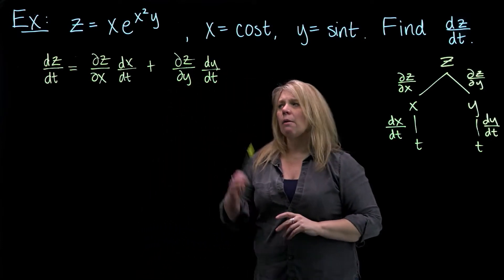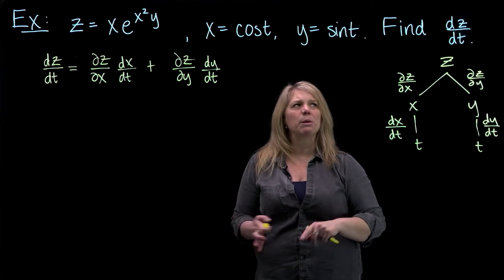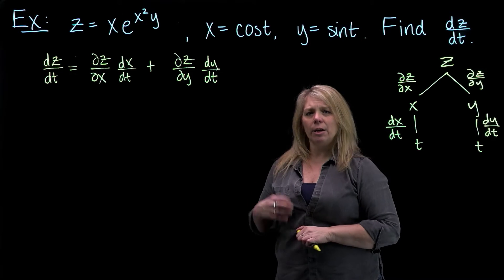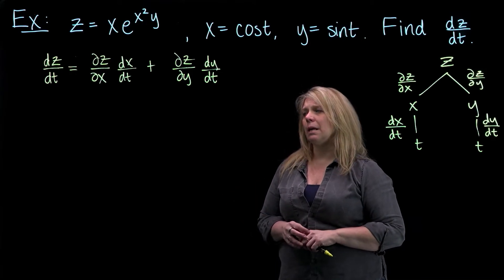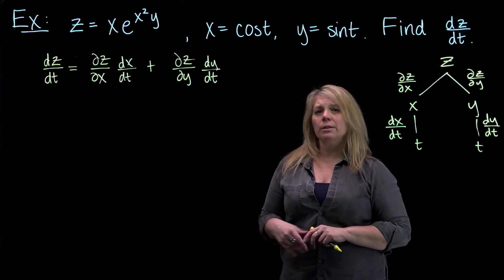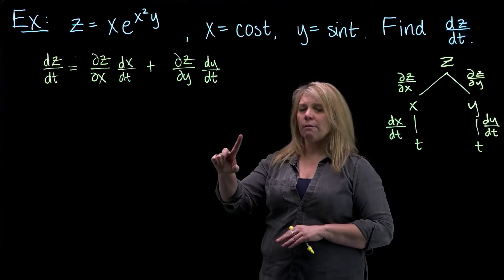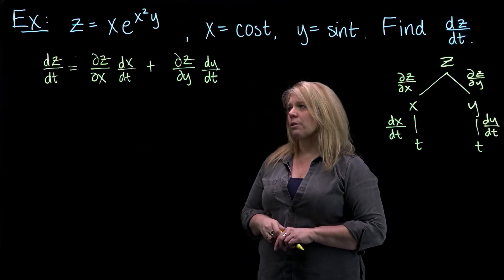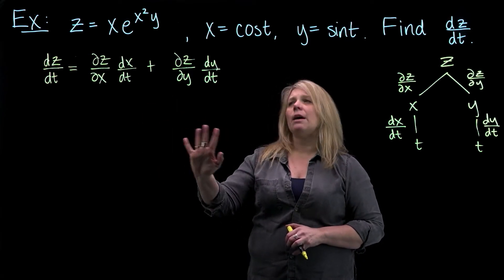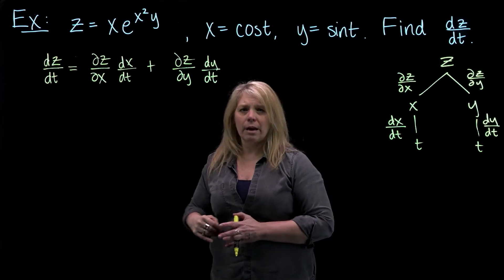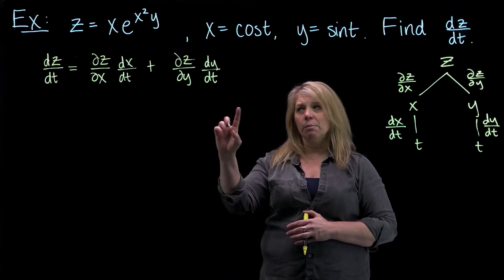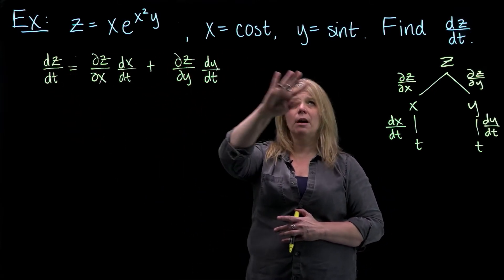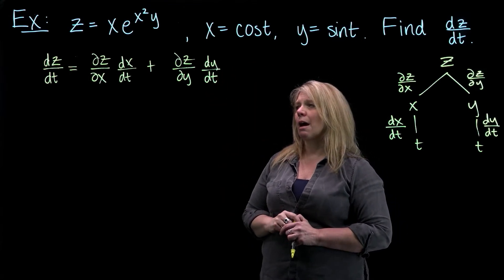So I want to actually find this derivative and then maybe plug in a number to calculate the derivative at a particular value and interpret what that means. There are really two ways to do this problem. I'm going to do it first using the chain rule, and then I'll mention another way. But I want you to be able to write down the chain rule independently of whatever method you choose — you should be able to write down the appropriate chain rule for whatever combination of variables you have.